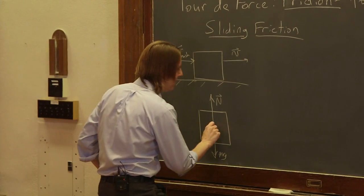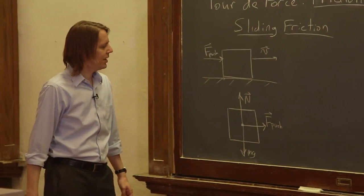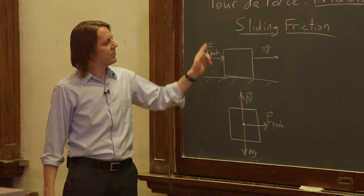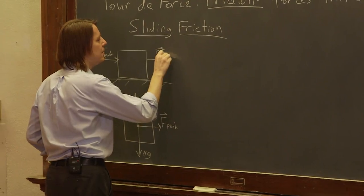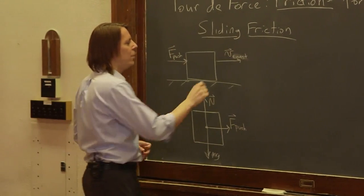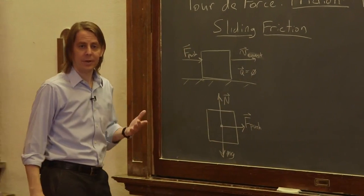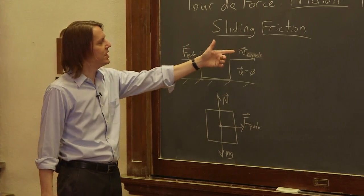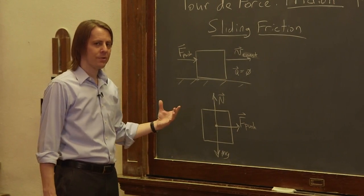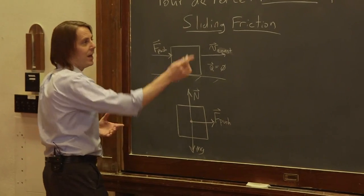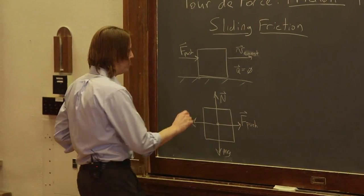We have a push force — we're pushing it to the right — but we're pushing it such that it has constant velocity. So the acceleration is zero, right? If the velocity is constant, dv/dt — the rate of change of velocity — is zero. If the acceleration of the block is zero, there must be no net force. So this friction force must push back; we know it opposes motion. In this case, we also know that it's equal and opposite to the pushing force.